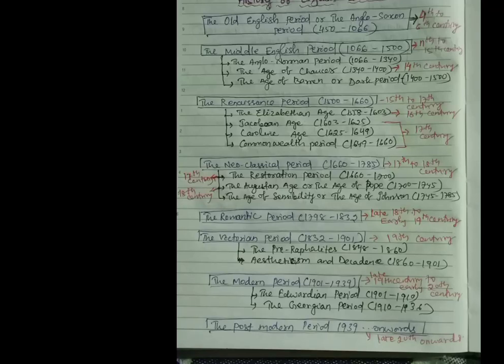Then the Victorian period, 1832 to 1901, the timeline. It belonged to 19th century. Under 19th century we will get the Victorian period. It is divided into two ages: the Pre-Raphaelites and your Aestheticism and Decadence.